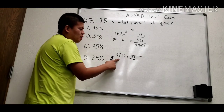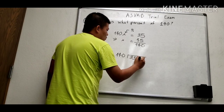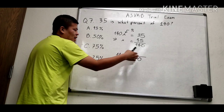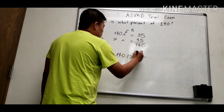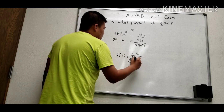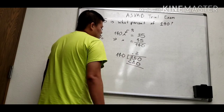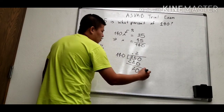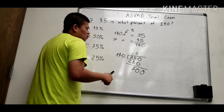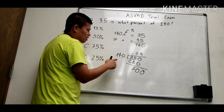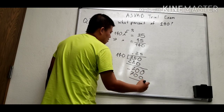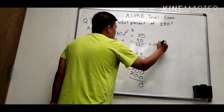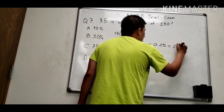Since 35 is less than 140, we need a decimal result. We perform the long division: 350 divided by 140 gives 2, so we have 0.2 with remainder. Then 700 divided by 140 is 5, giving us 0.25. So x equals 0.25, or 25 percent.